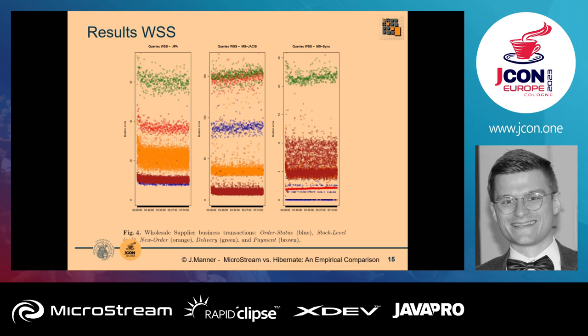For the wholesale supplier stock level transaction, the MicroStream case uses the Java Streams API to filter and check stock entities — quite fast. The JPA case involves a fragmented data model requiring joins, which are costly. These are the key factors explaining the performance difference in this transaction.